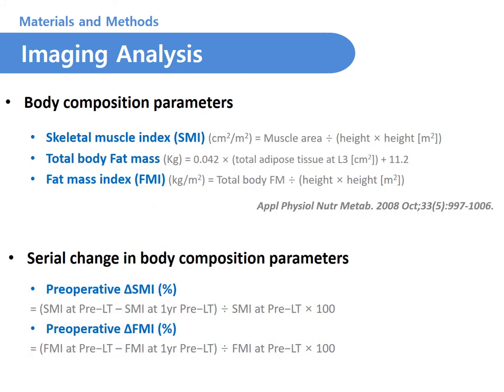Skeletal muscle index, SMI, and total body fat mass index, FMI, were estimated using the following regression equations. Serial changes in body composition parameters were also calculated using the two serial follow-up CT images.